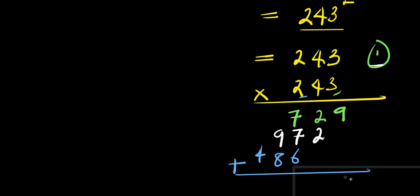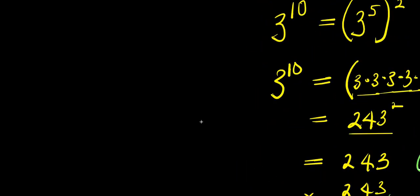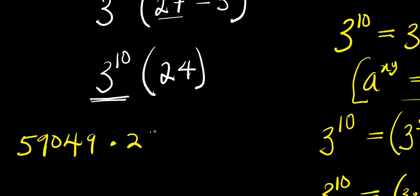Now we add up the partial products to get 59049. So we have 59049 times 24.